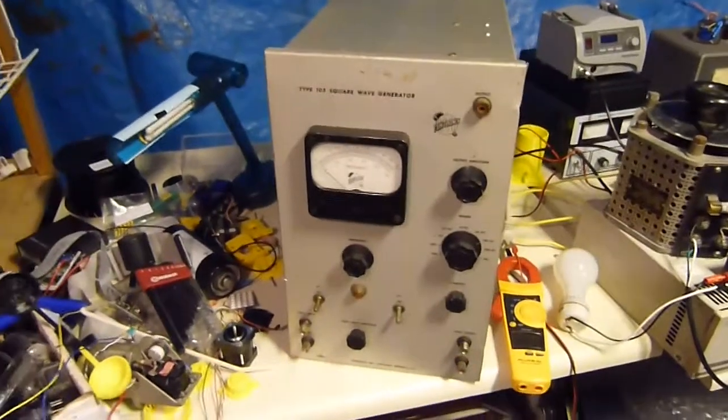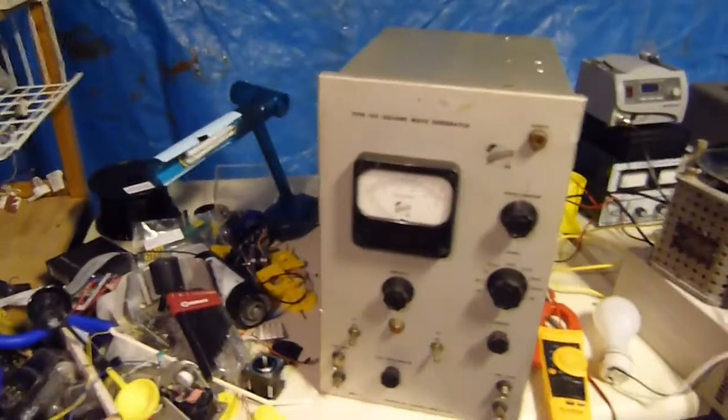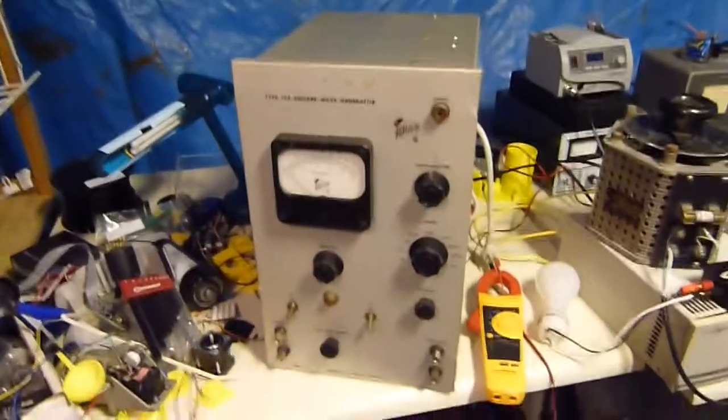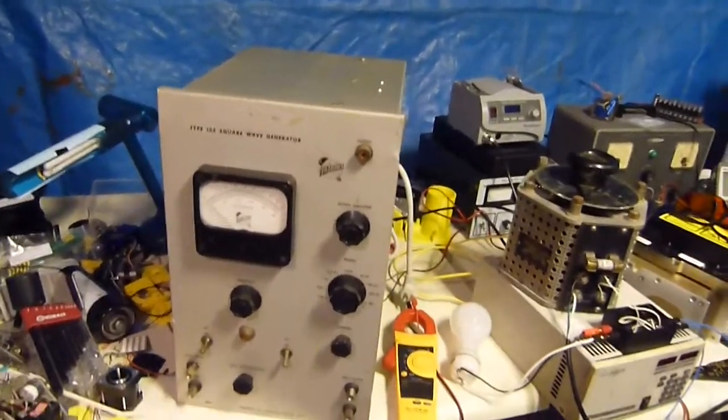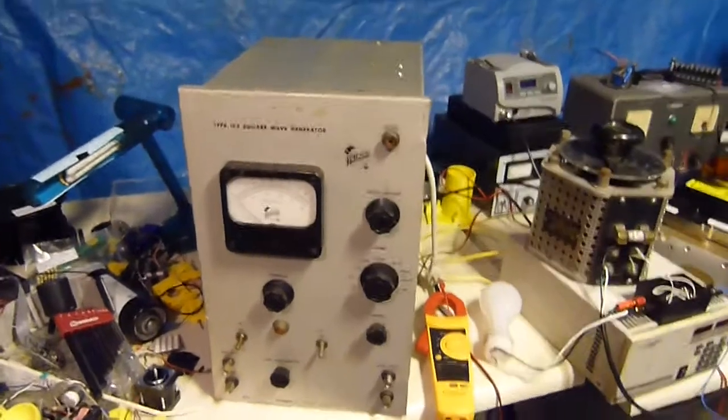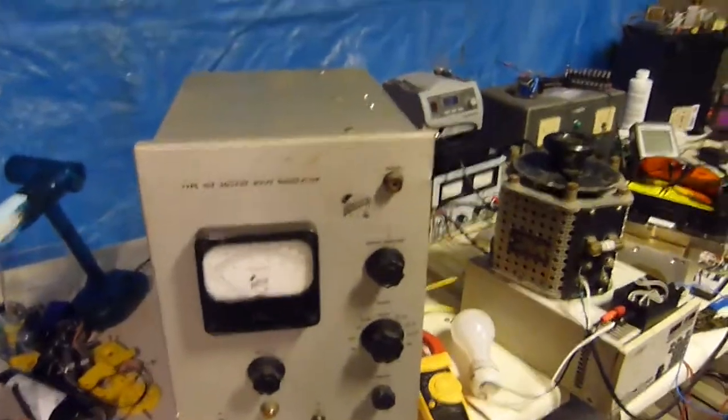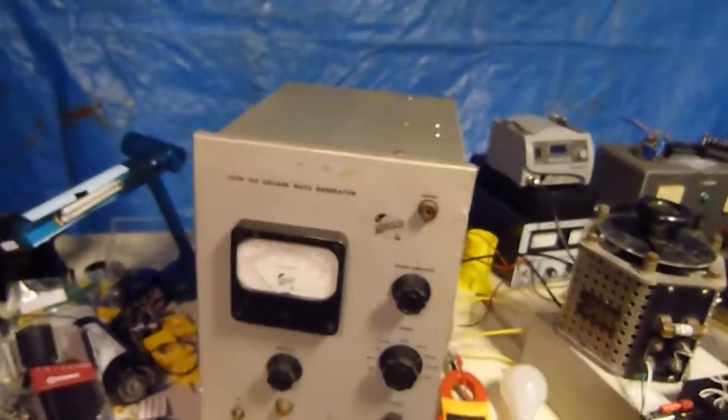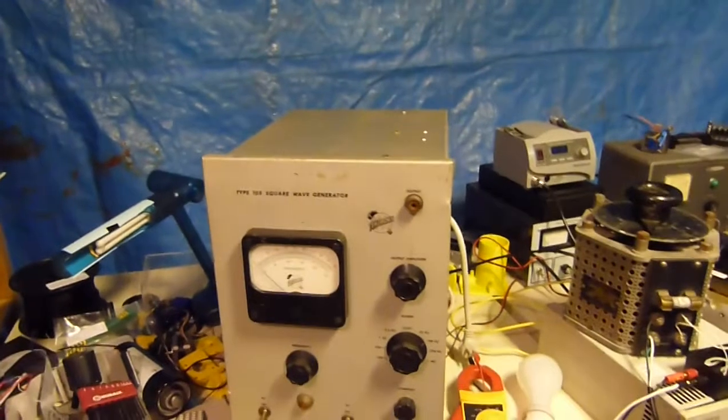This Saturday when I was at the junkyard, a truck pulled up and dropped off a whole bunch of metal scrap. Peeking out of it I saw a bunch of knobs and stuff. Turns out they had dropped off a whole bunch of old test gear. This is one of the first ones I pulled out of the pile. It's a Tektronix Type 105 square wave generator. From what I can find on Google, this thing dates to about 1950.